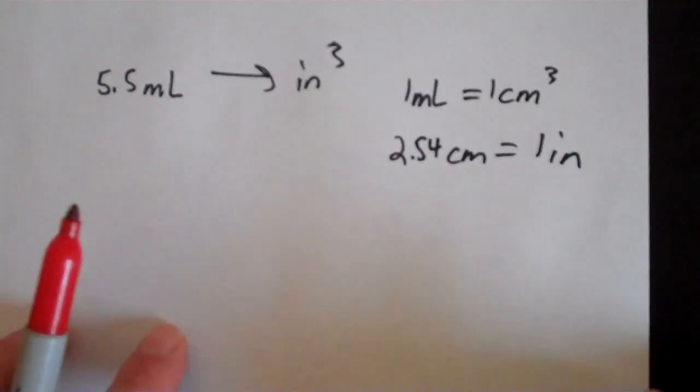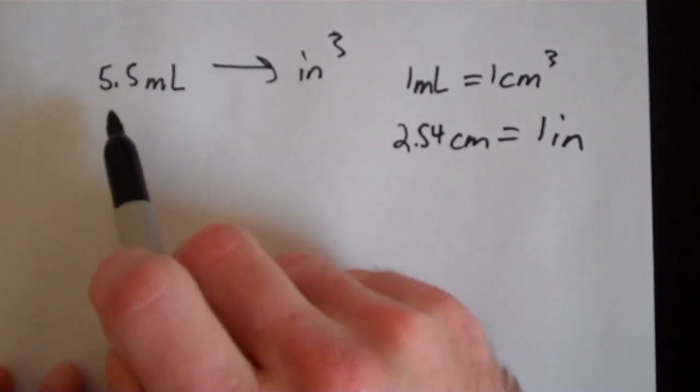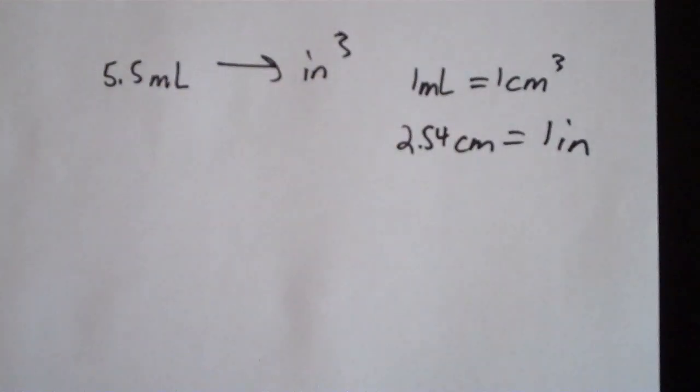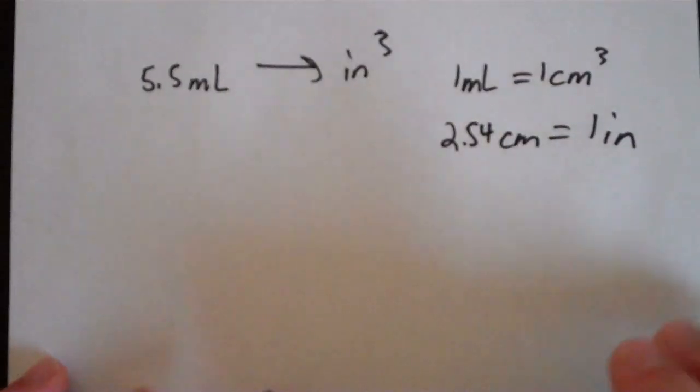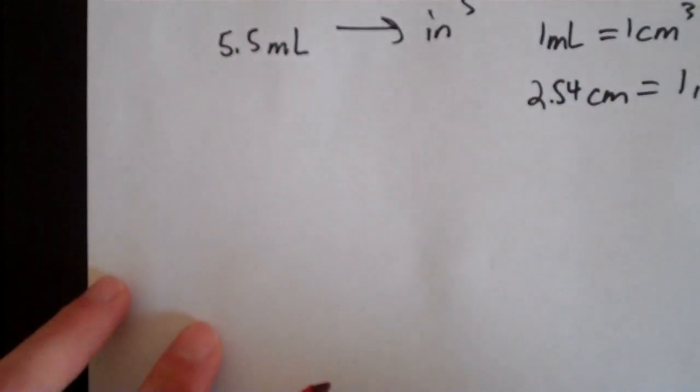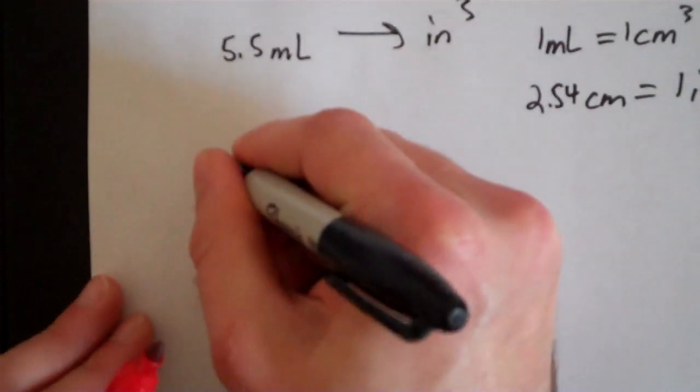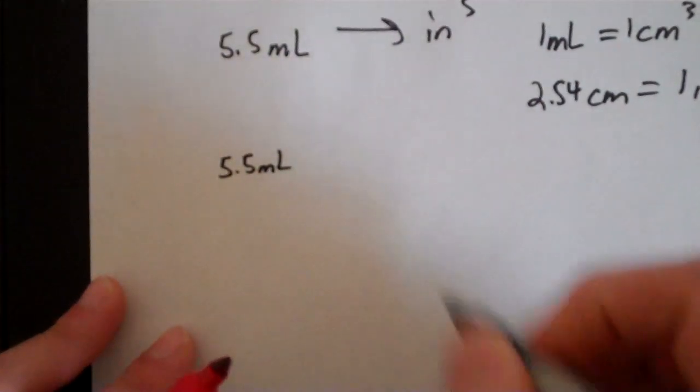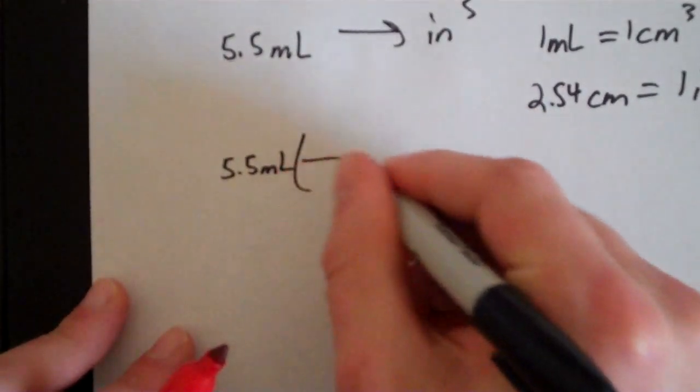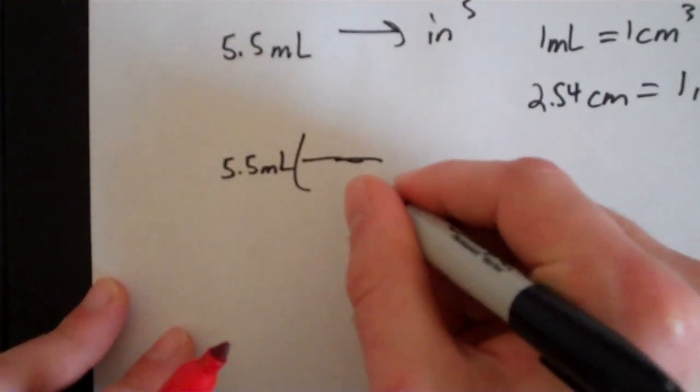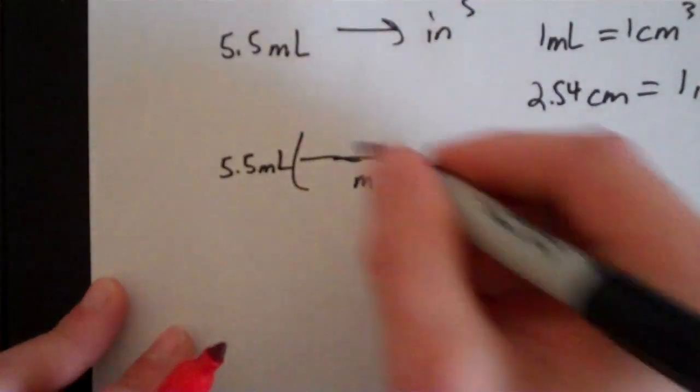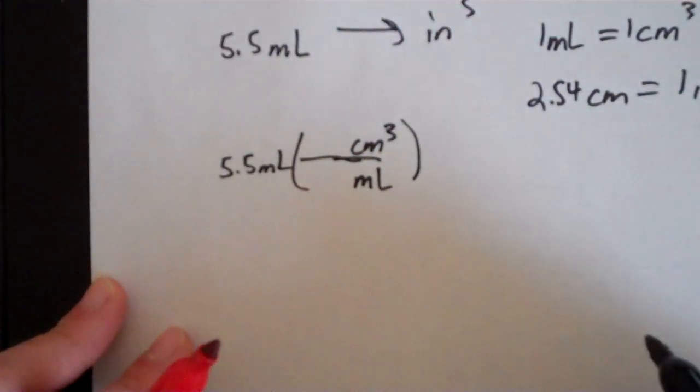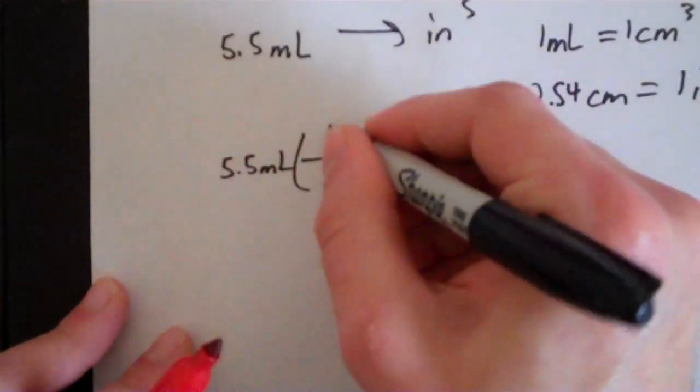Those two equations are what are going to help us convert from 5.5 milliliters to whatever that value is in inches cubed or cubic inches. So let's set it up. We start out with 5.5 milliliters. In our first conversion factor, we're going to put milliliters on the bottom and we're going to put cubic centimeters on top. And we know that 1 milliliter equals 1 cubic centimeter.